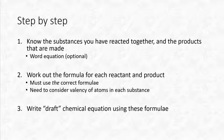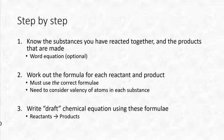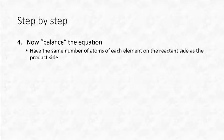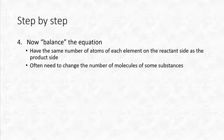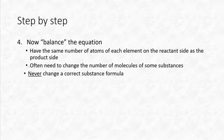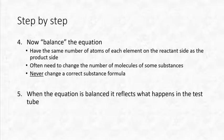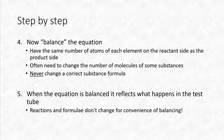Then we write a draft chemical equation using these formulas — reactants going to products with an arrow, for example A + B → C + D. That's our draft; it's unbalanced at this point. The next step is balancing: a balanced equation has the same number of atoms of each element on the reactant side as on the product side. We may need to change the number of molecules, but we never change a correct substance formula.